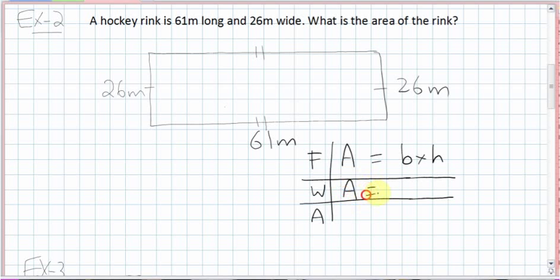Area equals base times height. And our formula work answer setup. Area we don't know. The base is 61 meters this time. The height, 26 meters. You multiply the two together and you get 1586 meters. Don't forget, because it's meters times meters, we are squaring that unit. So, it's 1586 meters squared.